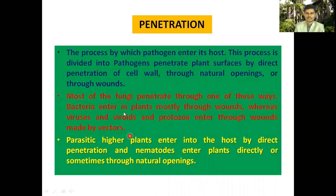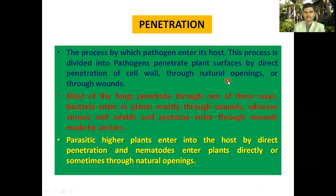The next event that occurs during disease development is penetration — the insertion or entry of the pathogen into the host. This process occurs in two ways: the pathogen may directly penetrate the plant cell wall, or it may enter through a natural opening such as stomata, lenticels, or hydatodes.